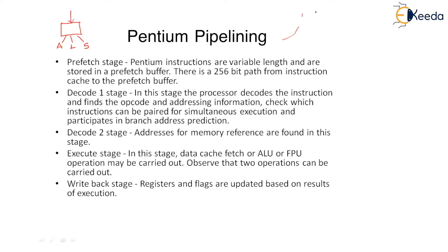When it comes to instruction pipelining, the Fetch, Decode, and Execution phases will be pipelined — we separate these segments: Fetch, Decode, Execution. In the earlier versions such as Pentium 1 and 2, we used a three-segmented pipeline. But when it comes to Pentium 3 or 4 and later, we used a five-stage pipeline. We're going to talk about this five-stage instruction pipeline right now.